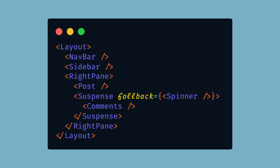Suspense is going to be extremely useful with SSR, or server-side rendering. Currently with SSR you get fully rendered HTML, but your browser still has to load the JavaScript and hydrate the entire page before it can become interactive. Suspense could speed up this load time dramatically. Using the example from the React 18 working group repo, here we have a page loading a navbar, a sidebar, a post, and comments. We really don't need the comments to load before the site becomes interactive.